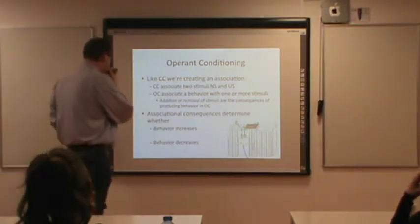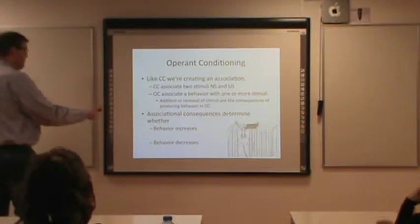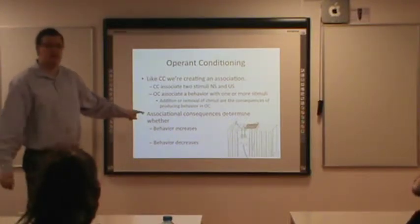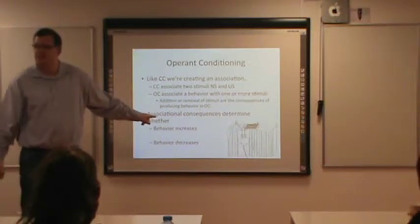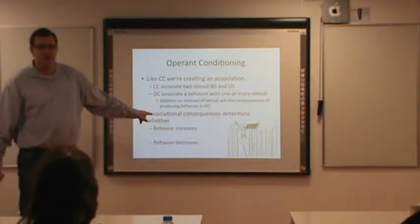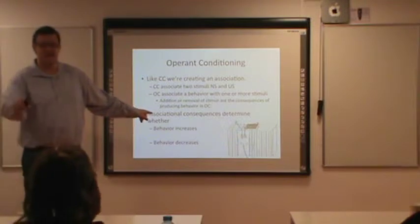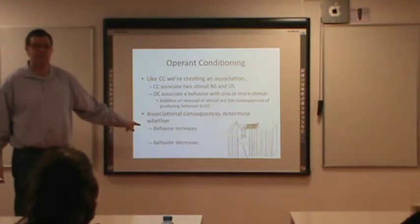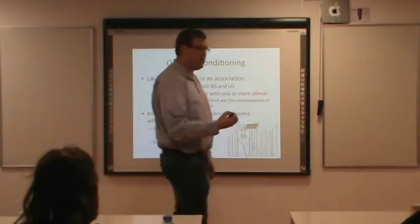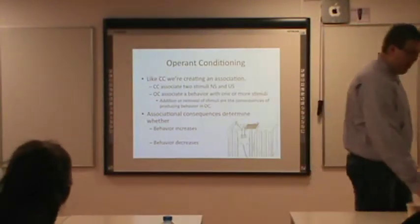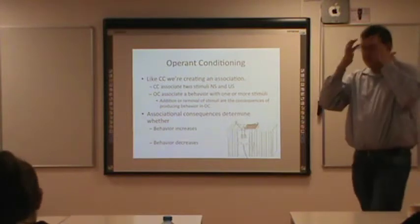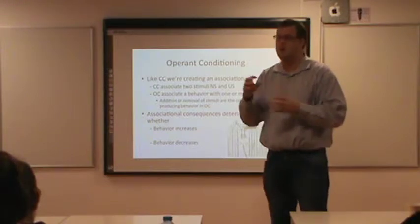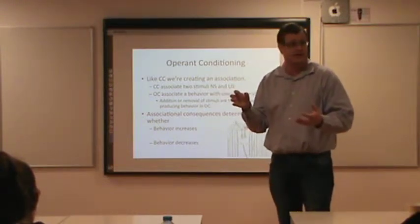The associational consequences determine whether the behavior increases or decreases. If the behavior increases, we have reinforcement. If the behavior decreases, we have punishment. That's the important thing — when you're trying to think about punishment versus reinforcement, just think about whether the behaviors are increasing or decreasing in that situation.